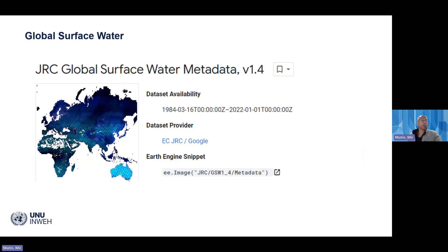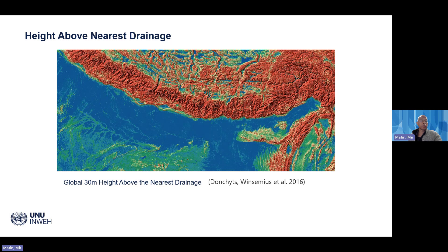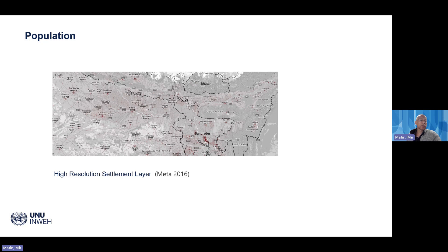We also use the Joint River Commission global surface water data available in Google Earth Engine. Height above nearest drainage represents, for every 30-meter pixel, the height from the nearest drainage such as a river or river channel. For population, we use the high resolution settlement layer developed by Meta at 30-meter resolution, which includes various parameters such as population age group and gender distribution.